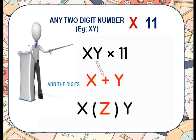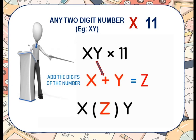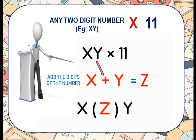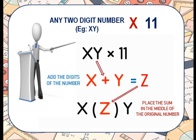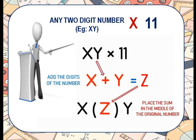First, we have to add the digits of the number, that is x and y. We add x plus y and the sum will be z. Next, we have to place the sum z in the middle of the original number — that is z in between x and y — and we get the product as xzy.